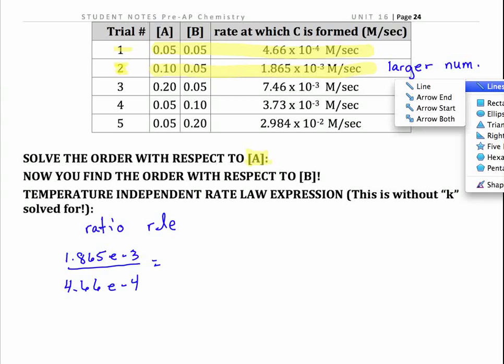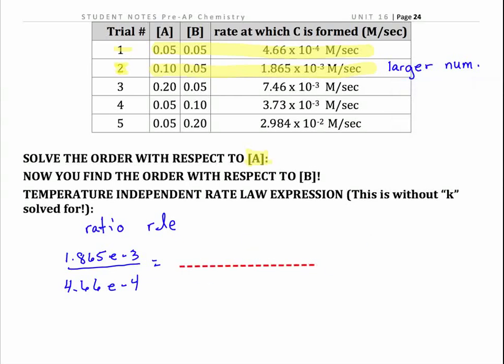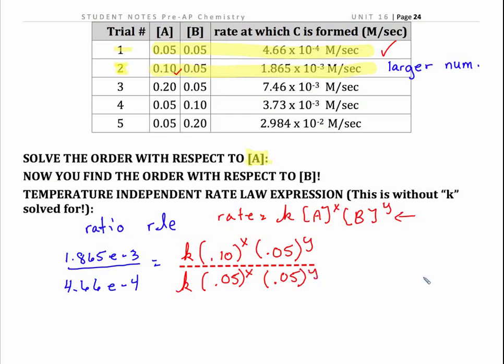So I'm going to put my larger rate 1.865 times 10 to the minus third over 4.66 times 10 to the minus fourth. Now what we're going to have then is we're going to put generic rate laws on the other side. So we're going to put K for the rate constant. We're going to put, remember the rate law was rate is equal to K times A to some power X times B to some power Y. So I'm going to put A, which is 0.1. Be careful, it's real easy to flip-flop. To some power times B to some power. So I simply substitute it into that generic rate law. Now I'm going to do the same thing using the data from trial 1. If temperature didn't change, K didn't change, so I've got K times 0.05 to some power times 0.05 to B's power.